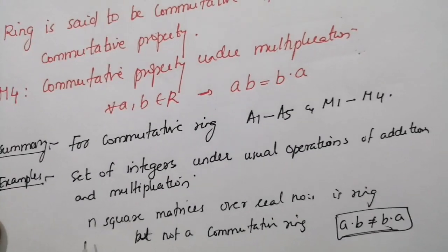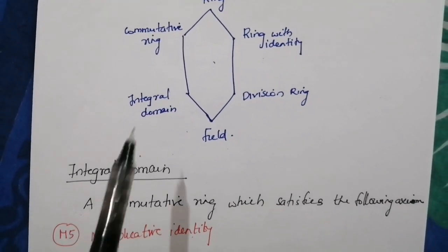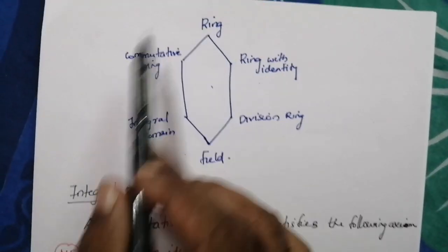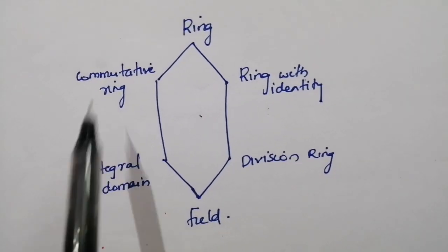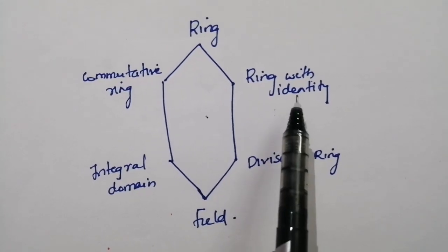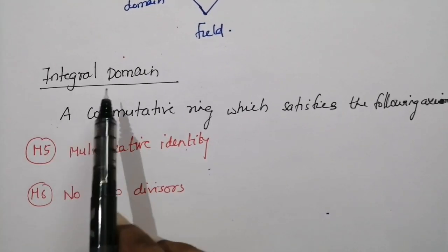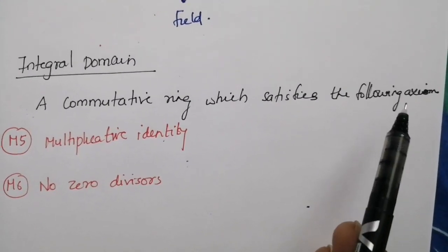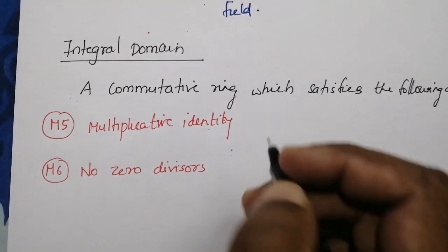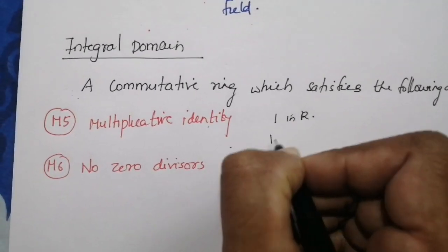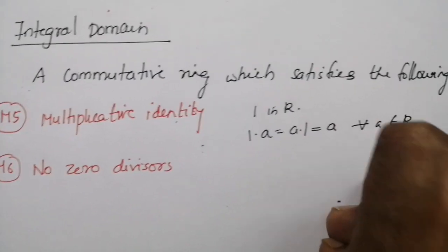In order to understand the concept of integral domain and division ring, consider the diagram. We can see that for an integral domain it should be a commutative ring, and for a division ring it should be a ring with identity. An integral domain is a commutative ring which satisfies the following axioms. It should contain a multiplicative identity — that is, there is an element 1 in R such that 1·a = a·1 = a, for every a belonging to R.